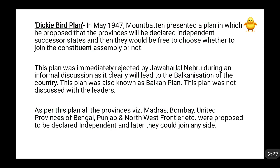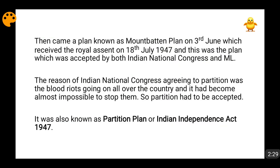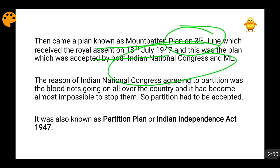This plan was also not welcomed by the Muslim League, friends, because the Muslim League also wanted a united Pakistan. So finally, the Mountbatten Plan came on the 3rd of June, known as the Indian Independence Act of 1947. It received the signature of the British Monarch on 18th of July 1947, and was accepted by both the Indian National Congress and the Muslim League. It was also known as the Partition Plan, in which assent was given to divide the country into India and Pakistan.